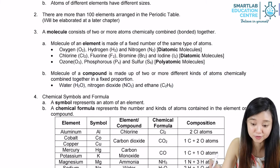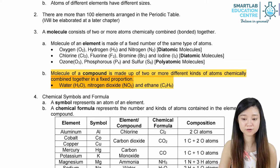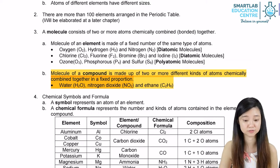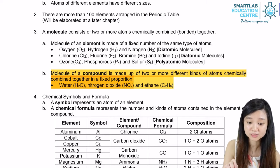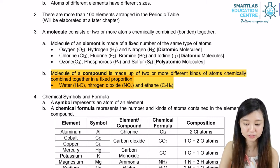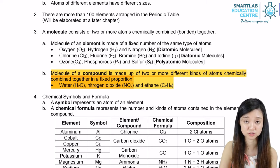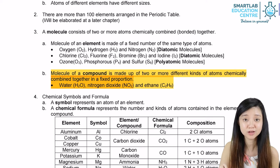If it's a molecule of a compound, then it's going to be made up of two or more different kinds of atoms chemically combined together in a fixed proportion. One example we have is water. Water is H2O, which consists of two atoms of hydrogen and one atom of oxygen. Nitrogen dioxide consists of one atom of nitrogen and two atoms of oxygen, hence it's NO2.